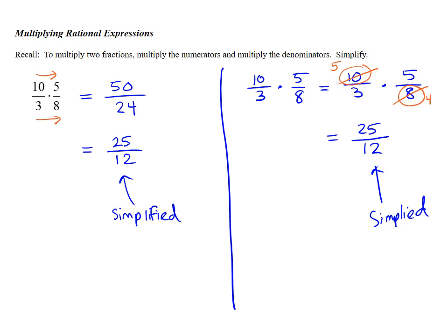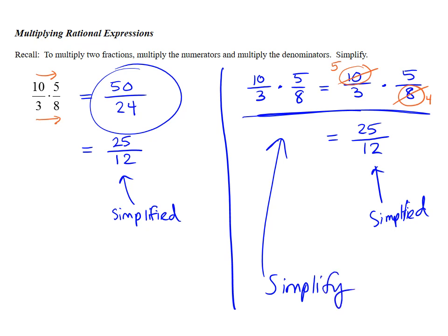Generally, when we're working with rational expressions where there are variables involved, we don't want to have to multiply it out first and then simplify. We want to simplify first, factor and simplify. That will create a much easier process instead of having to multiply out first. So that's what we're going to concentrate on is the second technique.